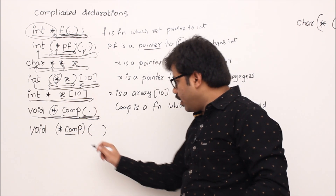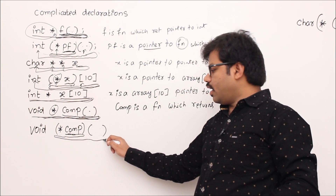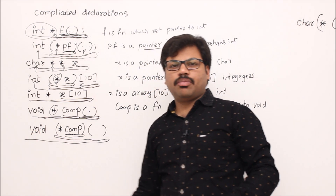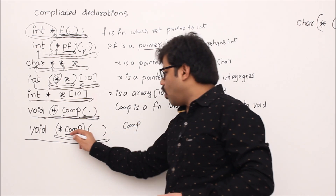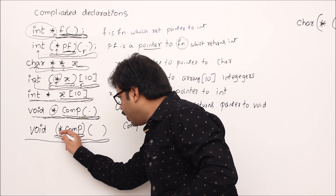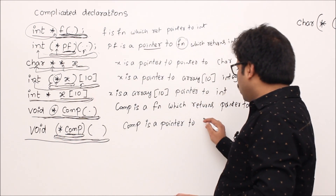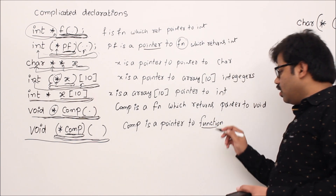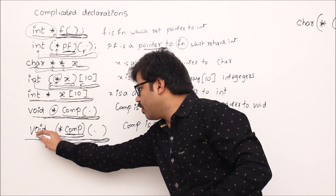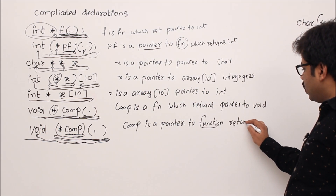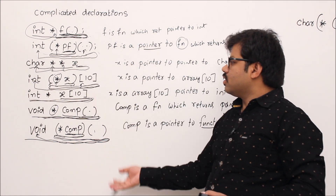Next declaration: 'comp' again with a priority symbol. Start at comp, see priority — go left, resolve the priority, then go right. 'comp is a pointer to a function.' Function which doesn't take any arguments. Go leftmost: we see void. So 'comp is a pointer to a function which takes no arguments and returns void.'